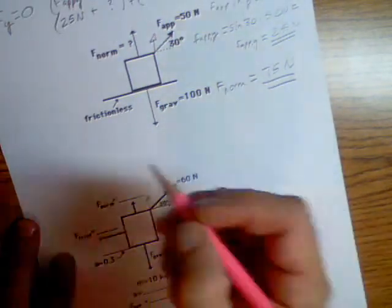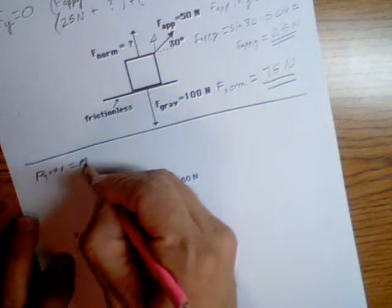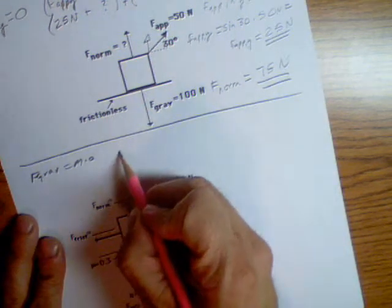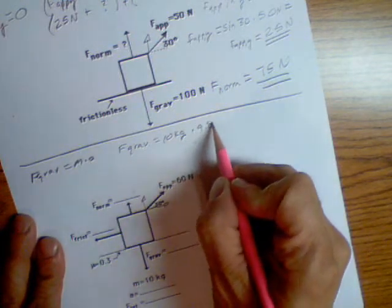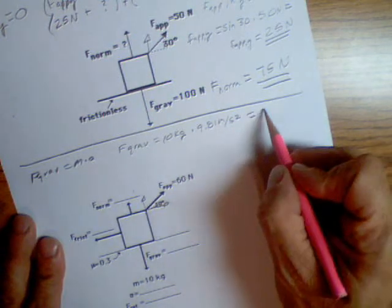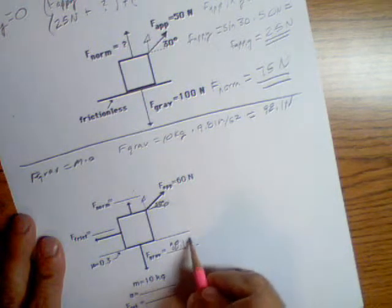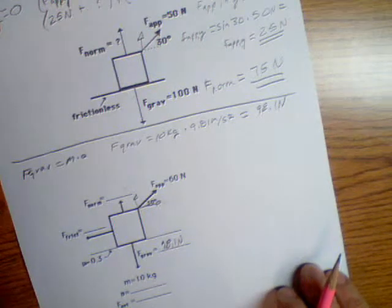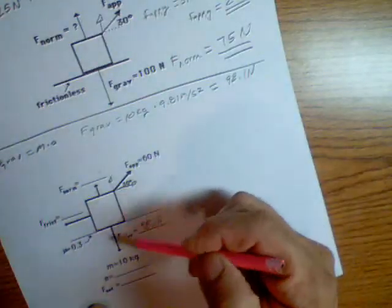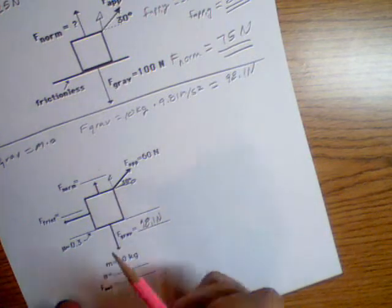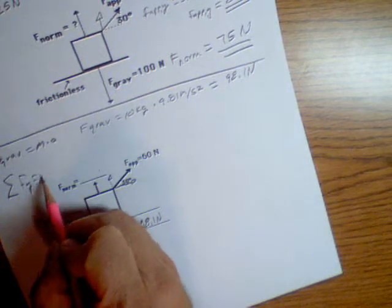Let's get cracking. The force of gravity equals mass times acceleration, so force of gravity equals 10 kilograms times 9.81 meters per second squared. Therefore our gravitational force is 98.1 newtons. We'll go back to what we did last time with forces in the y direction, because it's sitting on a surface and it's not moving up or down. So all forces in the y direction equal zero.